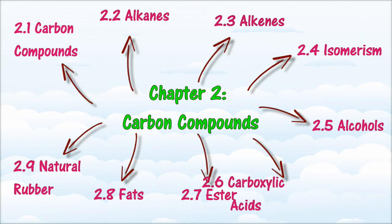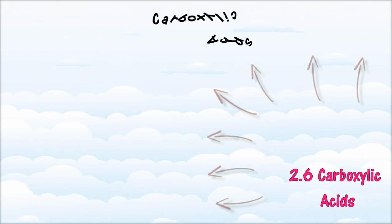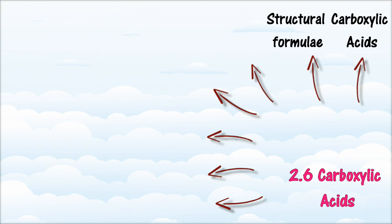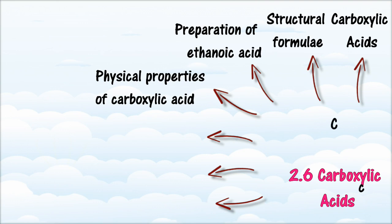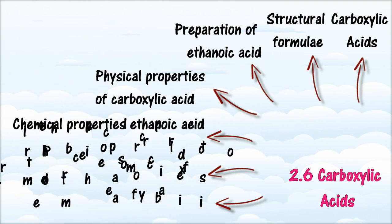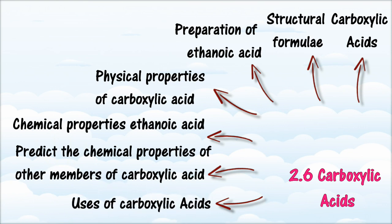In Section 2.6, we will learn about Carboxylic Acids. At the end of this section, you should be able to: state the general formula of carboxylic acids; identify the functional group of carboxylic acids; list the names and molecular formulae of the first 4 members of carboxylic acid; draw structural formulae of the first 4 members of carboxylic acid and name them using IUPAC nomenclature; describe the preparation of ethanoic acid in the laboratory; state the physical properties of carboxylic acids; state the chemical reactions of ethanoic acid with other chemicals; predict the chemical properties for other members of carboxylic acid; and explain with examples the uses of carboxylic acids in everyday life.